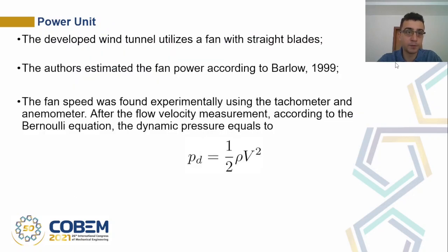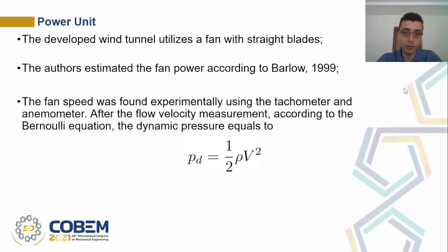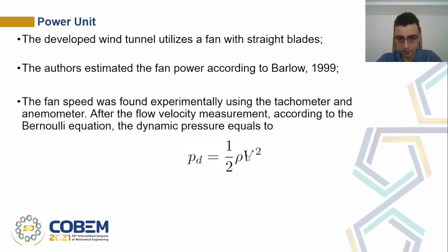The developed wind tunnel utilizes a fan with straight blades to add power to the system. The authors estimate the fan power according to the book Barlow. The fan speed was found experimentally using a tachometer and anemometer. After the flow velocity measurement, according to the Bernoulli equation, the dynamic pressure was calculated as half of the air density times the speed squared.